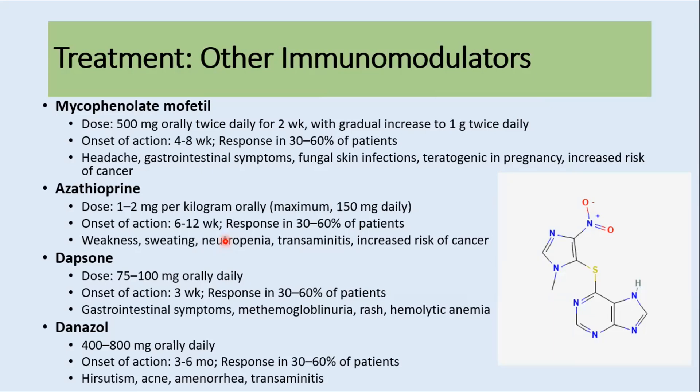Other immunomodulators that have been used in ITP include mycophenolate mofetil, azathioprine, dapsone, and danazol. These agents can be used as second-line agents in selected groups of patients.